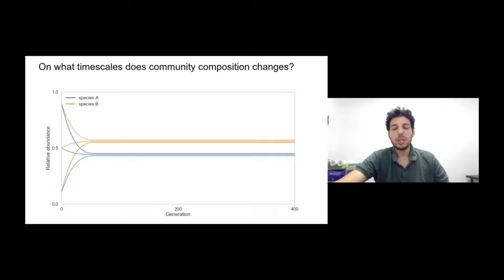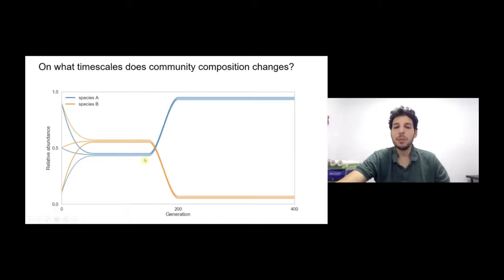One option is that for hundreds of generations community composition stays the same, in which case predictions are easy — our previous short-timescale prediction holds. But things can be more complicated: maybe a beneficial mutation in one species causes it to take over, and now we need to amend our prediction because it won't be accurate based on short timescales alone.